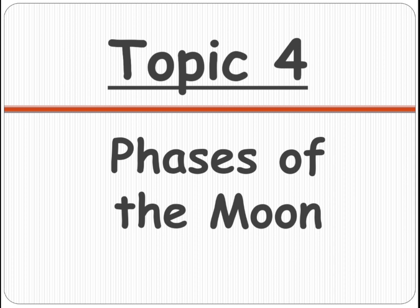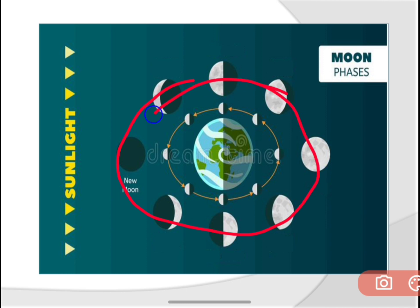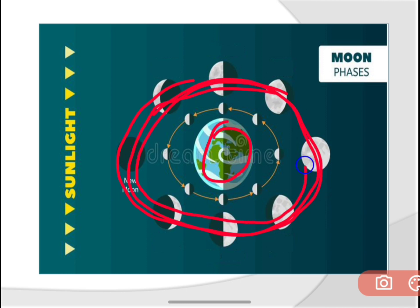There you can see the moon. As you all know, earth revolves around the sun. In the same way, the moon also revolves around the earth. So this is your moon, this is your earth. Moon also revolves around the earth like this.